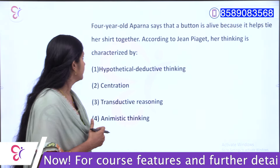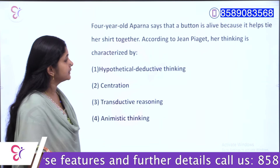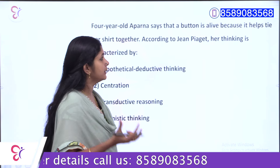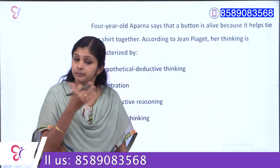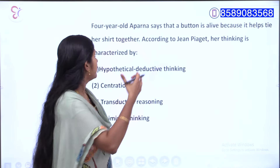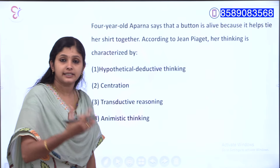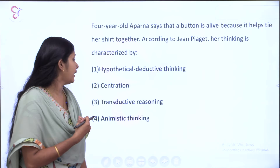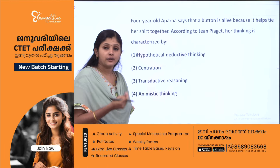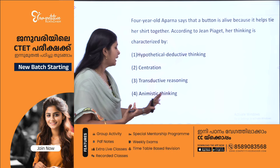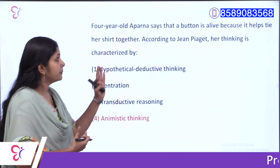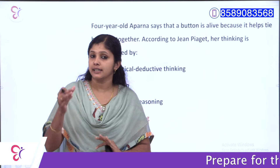Next question: a four-year-old says that a button is alive because it helps fasten a shirt together. According to Jean Piaget, this thinking is characterized as animistic thinking, which is part of the pre-operational stage. The child attributes life to inanimate objects.